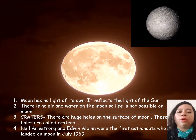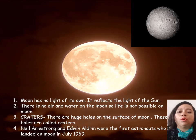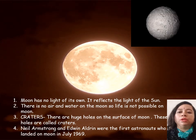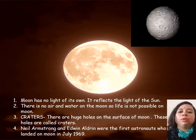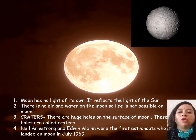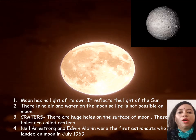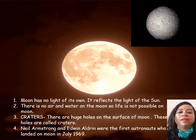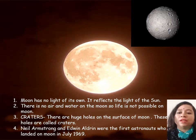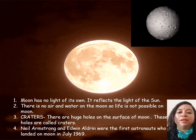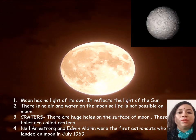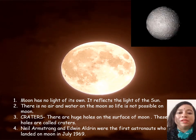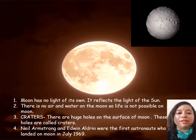The moon reflects the light of the sun. There is no air and water on the moon, so life is not possible on the moon. There are huge holes on the surface of the moon — these holes are called craters.